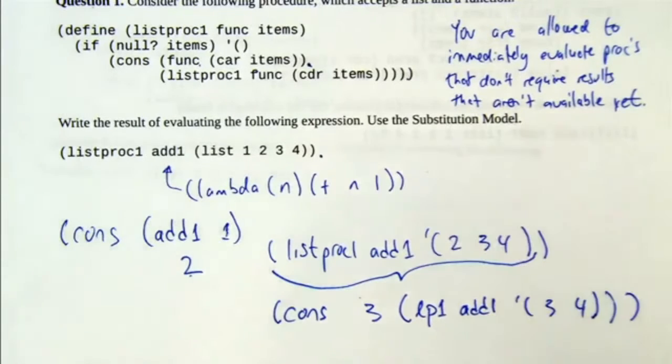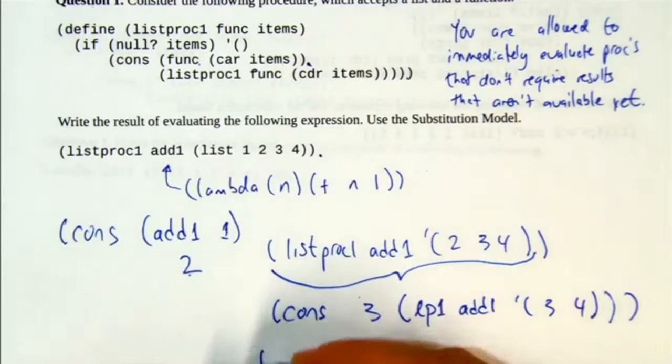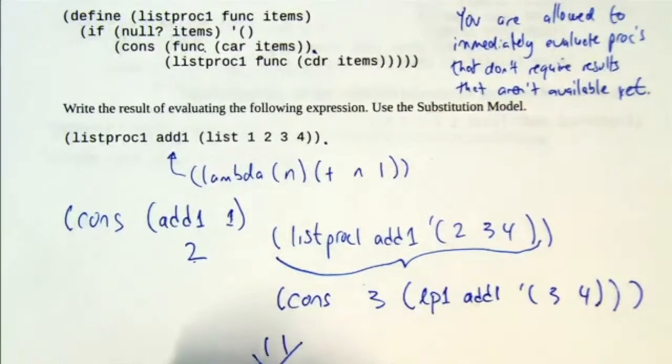So it's the classic recursion. So we get cons 2 to cons 3 to cons 4 to cons 5, finally to empty list. And then it unwinds and it spits out the list at the end, 2, 3, 4, or 5.